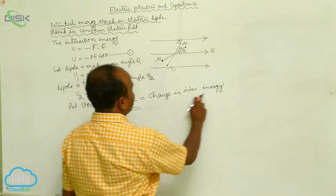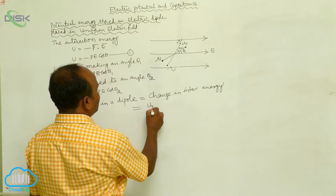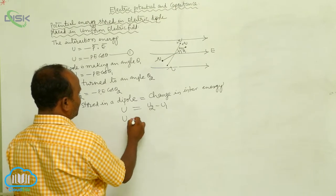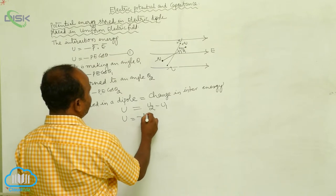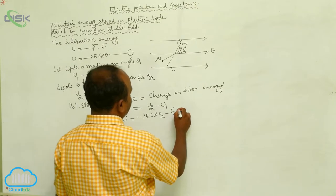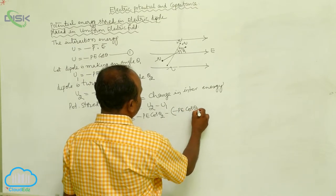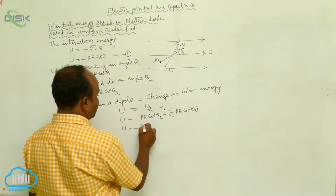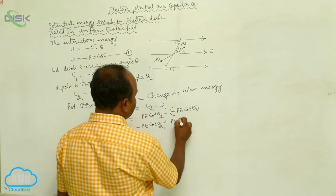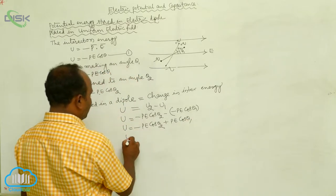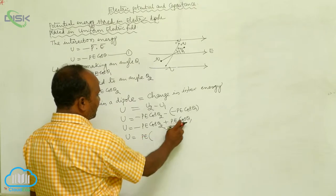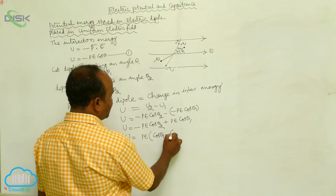What is the change in interaction energy? It is U2 minus U1. The potential energy U equals U2 minus U1. U2 is minus Pe cosθ₂, and U1 is minus Pe cosθ₁. Therefore, U equals minus Pe cosθ₂ minus (minus Pe cosθ₁), which gives Pe cosθ₁ minus cosθ₂, with Pe factored out.